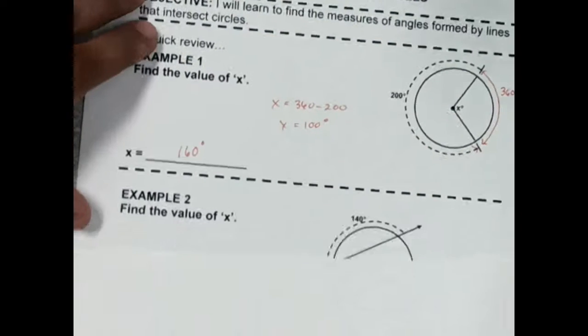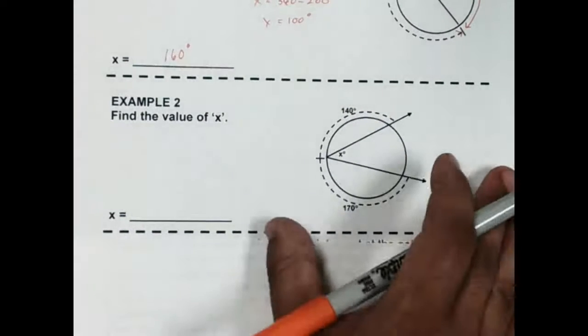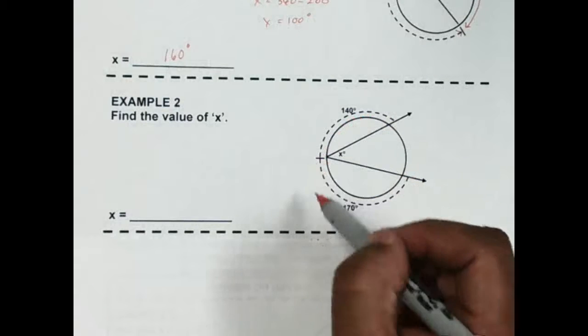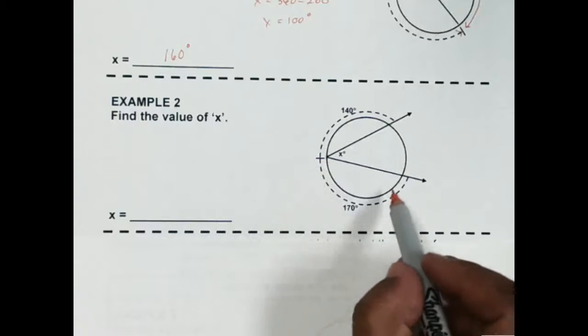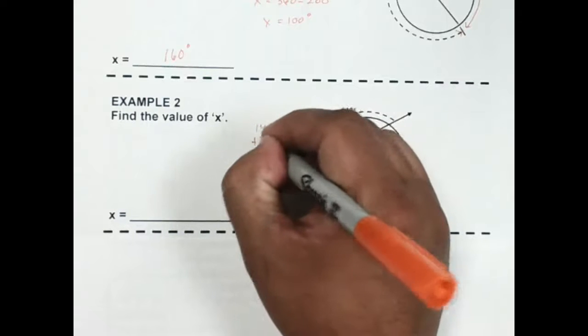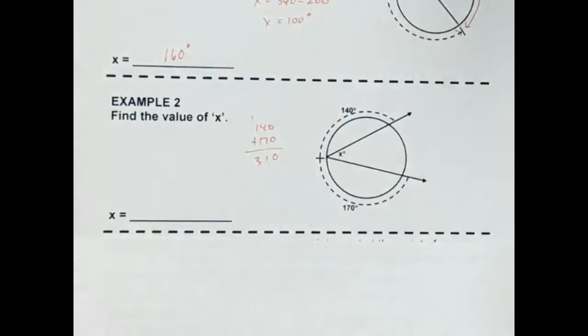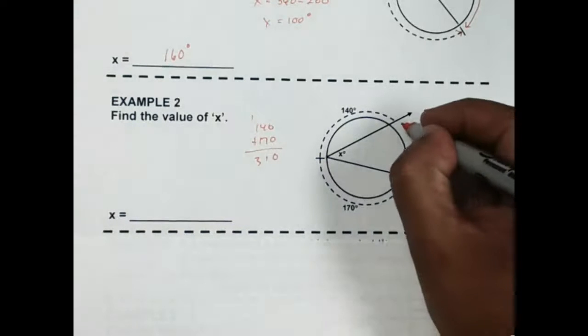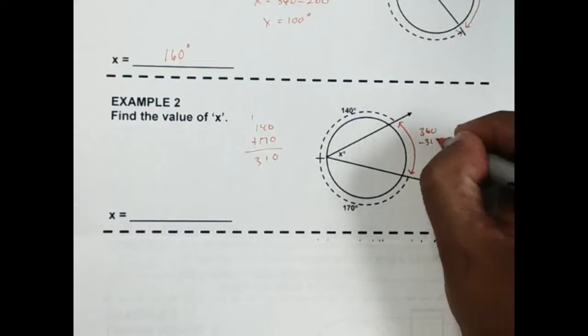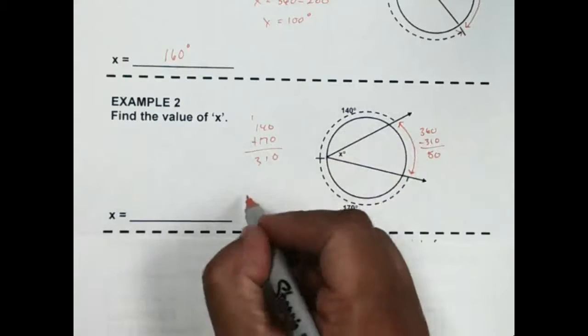Now I'm looking on to something like number 2. Same idea, from here to here is 140, going to this part is 170. So if I add those two, we get 310. So this part is going to be 360 minus 310, which is 50. So x is going to actually be